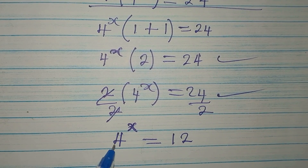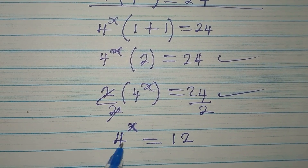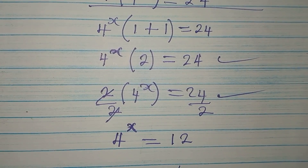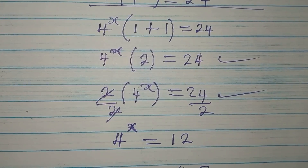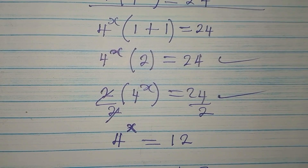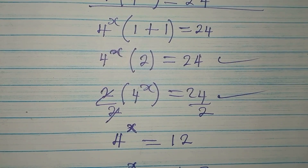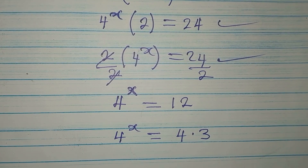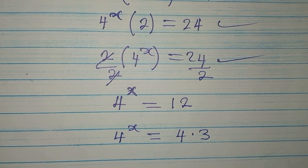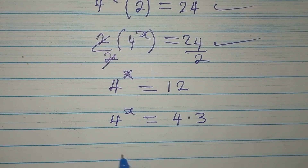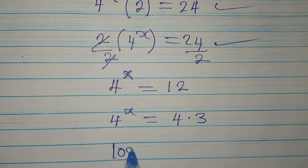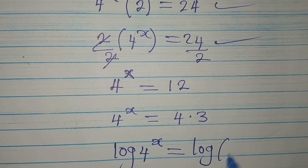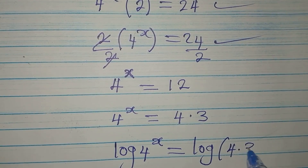We cannot express 12 as a power of 4 because 12 is only 4 multiplied by 3. So it is better that we take the log of both sides, giving us log of 4 to the power of x equals log of 4 times 3.